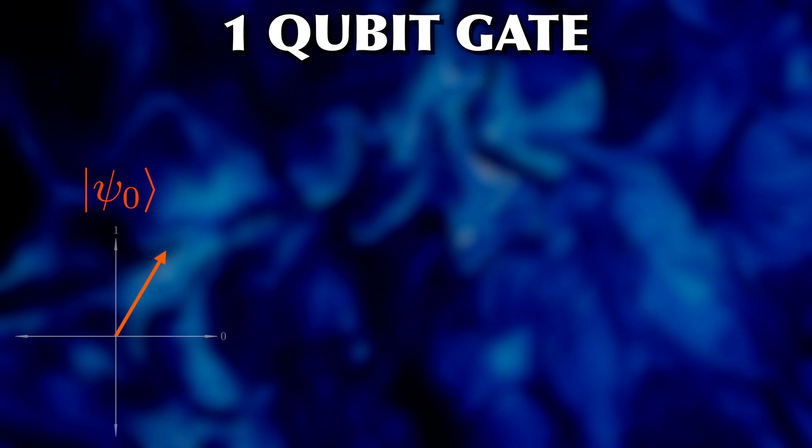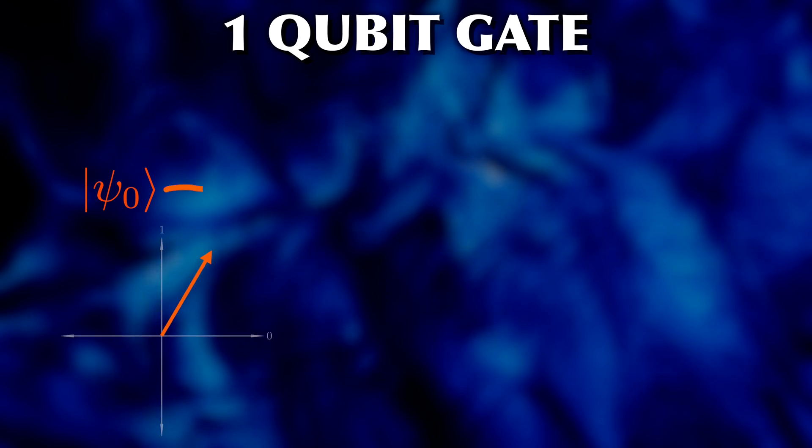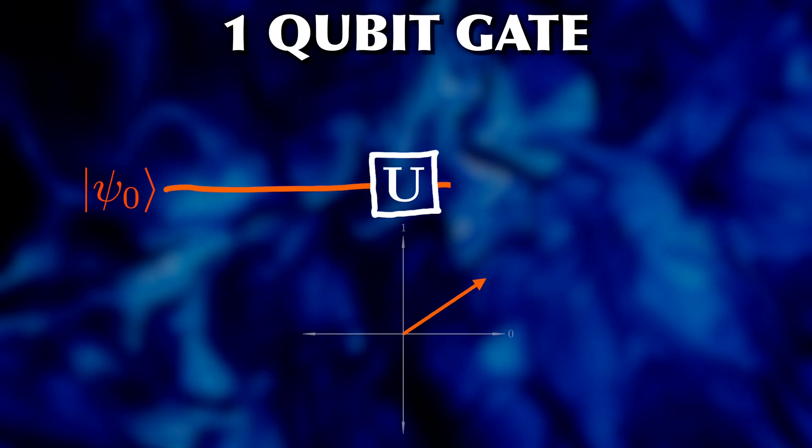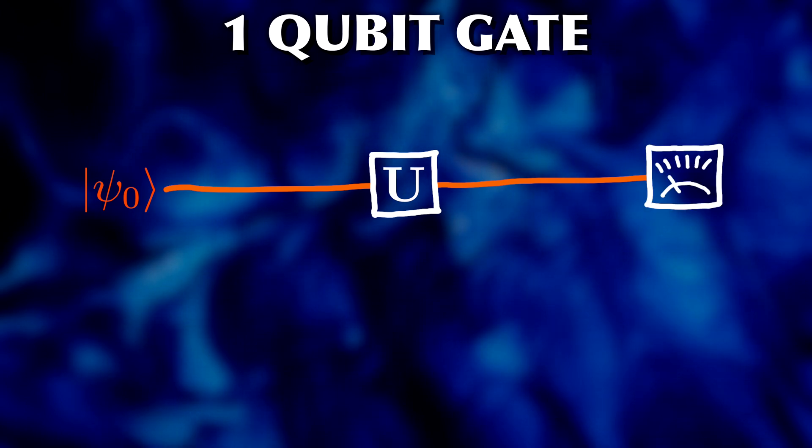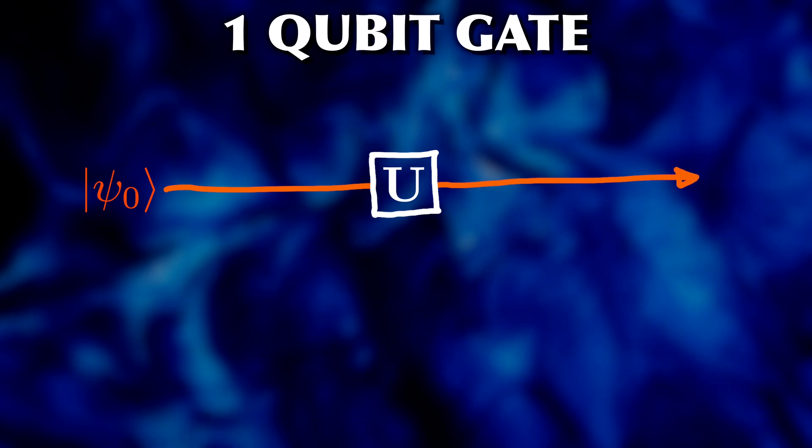So you start with a qubit in some initial state, then some operation is performed on this qubit, and then it is left in a different state. This state can then be measured or it can be used for further operations.